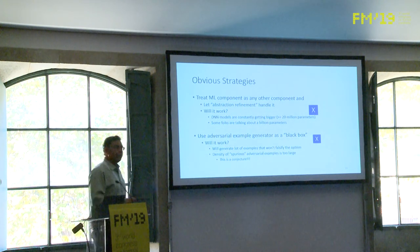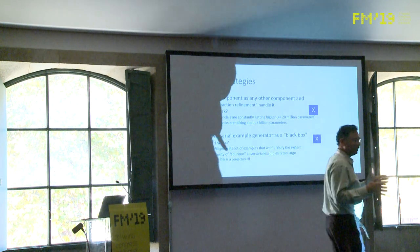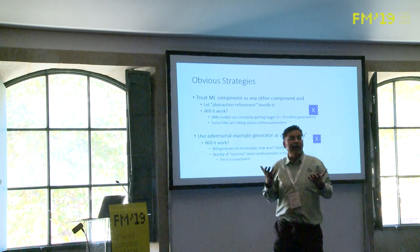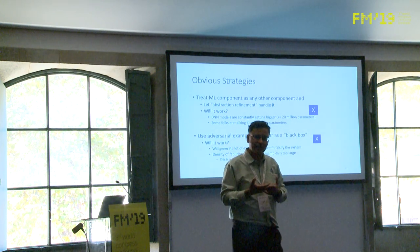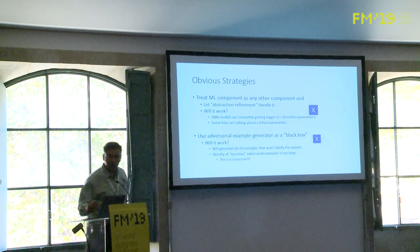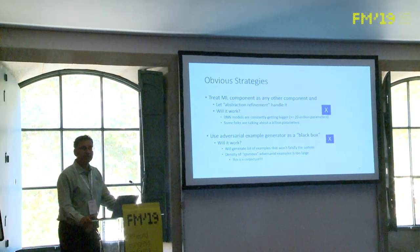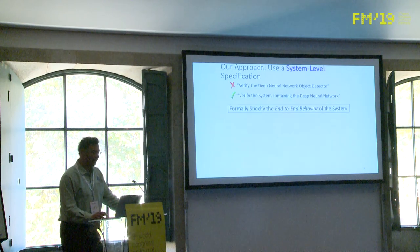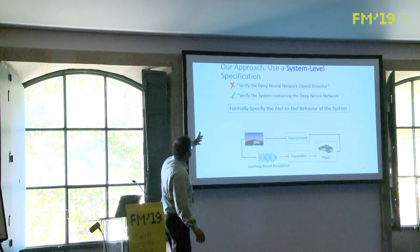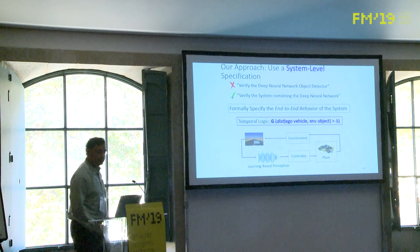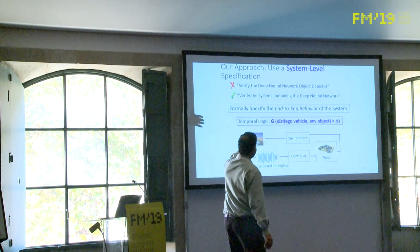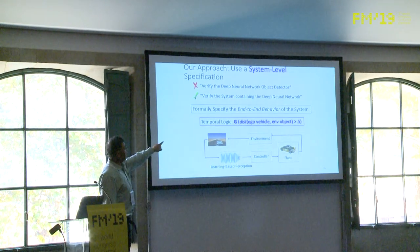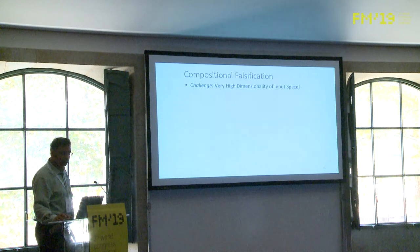More and more control loops in cyber-physical systems use machine learning models, but the existing tools cannot handle these large ML models. Abstraction is the key. In this case, we specify an end-to-end system in signal temporal logic — basically saying the distance between the ego vehicle and an environmental object must remain above a certain threshold — and we want to generate trajectories that violate that property.